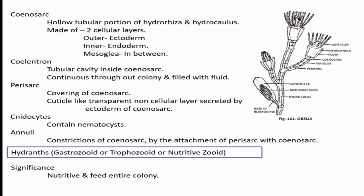The hollow tube of the colony is called the coenosarc. The coenosarc is formed of two cellular layers — outer ectoderm and inner endoderm — and in between these two layers is present mesoglea. The coelenteron, otherwise called the gastrovascular cavity, is the tubular cavity present inside the coenosarc. That cavity is continuous throughout the tube, is filled with fluid, and supplies nourishment to almost all parts of the colony.